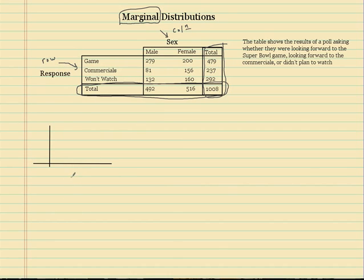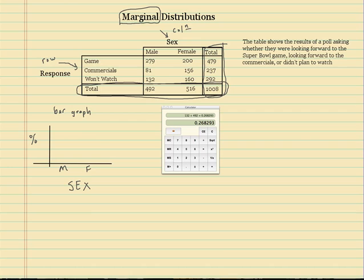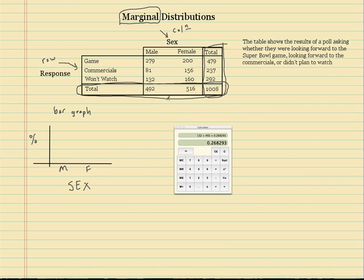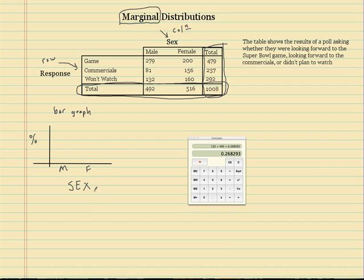So let's go ahead and do the first one. We'll do the column one, which is our sex variable. This will be our percent — we're going to do a relative frequency, not a frequency. We're not going to use counts; we're going to use percents. The sexes have two different categories: male or female. There are two ways to do it — a bar graph or a table format — and I'm going to show you both ways.